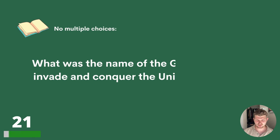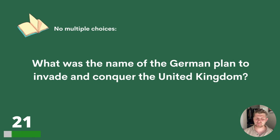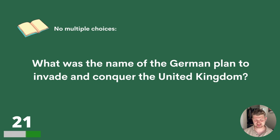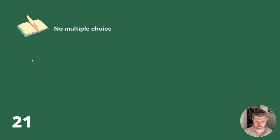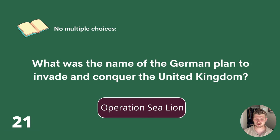Question 21. What was the name of the German plan to invade and conquer the United Kingdom? There are no multiple choices. The answer is Operation Sea Lion.